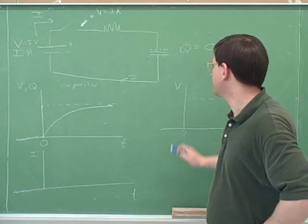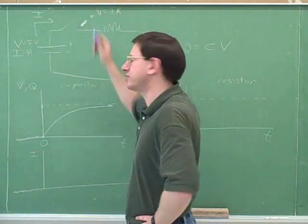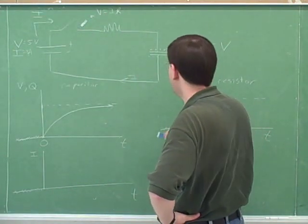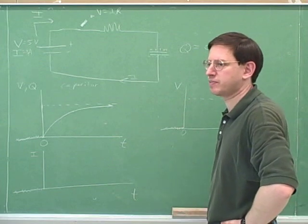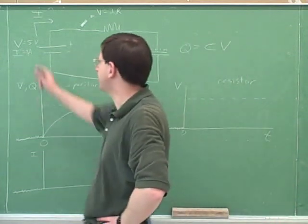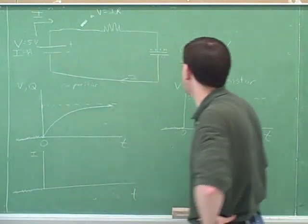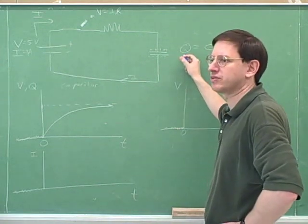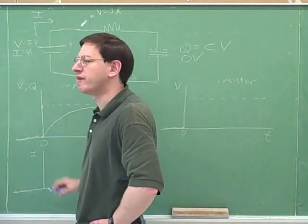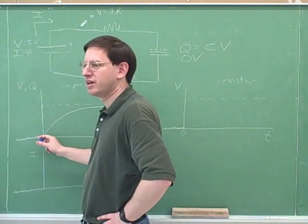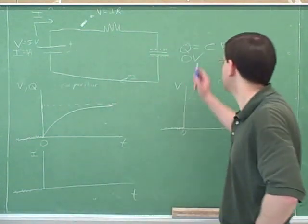When the switch was open before time zero, the voltage across the resistor was zero — one way to see that is there was zero current, and zero current means zero voltage. At time zero we close the switch. The voltage on the capacitor can't jump: since it was at zero just before time zero, it must still be at zero at time zero.